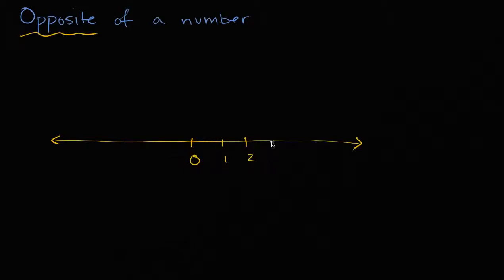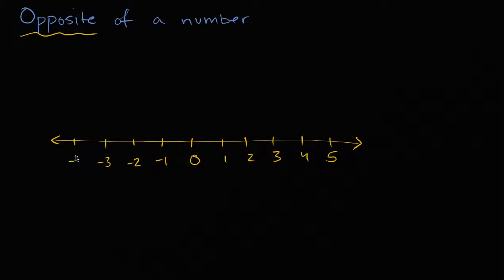One, two, three, four, five. As we go to the left, we get more and more negative. So negative one, negative two, negative three, negative four. And I could keep going on and on and on.